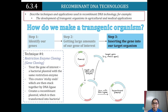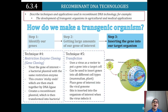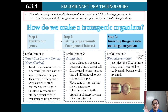Step three - restriction enzyme cloning: treat the gene of interest plus a bacterial plasmid with the same restriction enzyme, creating sticky ends which are joined by DNA ligase to form a recombinant plasmid, which is then transformed into bacteria. Technique five is transfection: it uses a virus as a vector to put a gene into a target cell - mammalian or plant. The gene of interest is placed into the viral genome, inserted into the organism of interest, and when the virus infects, the gene is delivered.